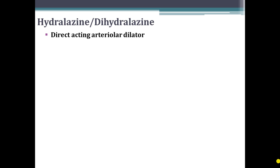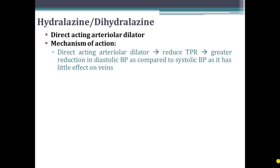The first drug is hydralazine, or dihydralazine. It is classified as a direct acting arteriolar dilator. By direct action on the arteriolar smooth muscle it produces dilatation and reduces the total peripheral resistance. There is greater reduction in diastolic blood pressure as compared to systolic BP, as it has little effect on the veins.